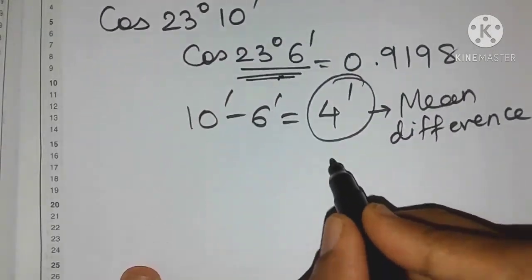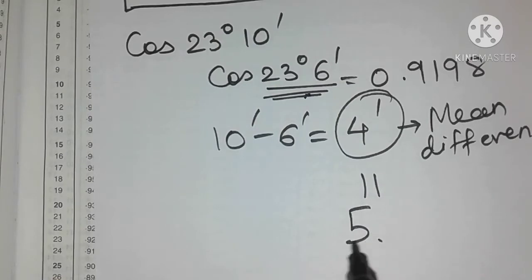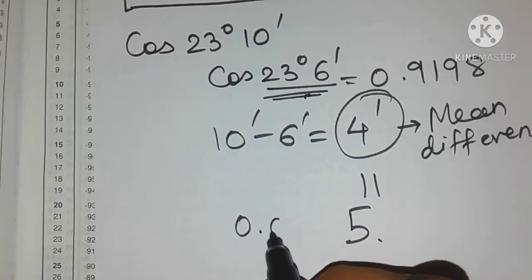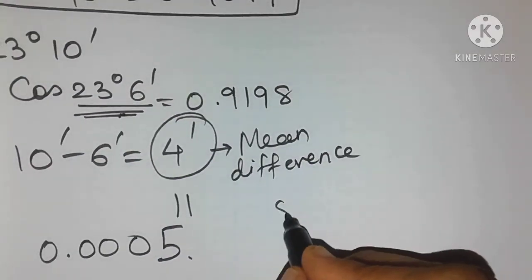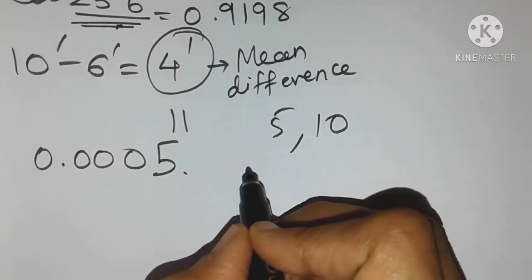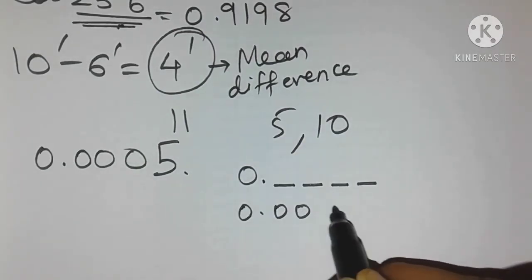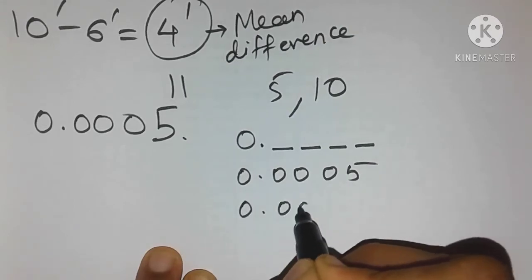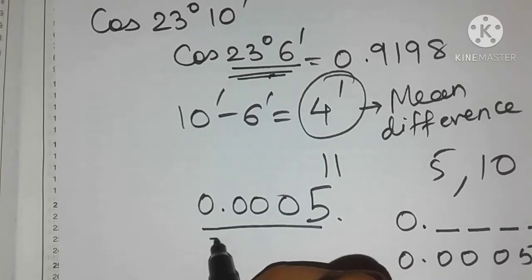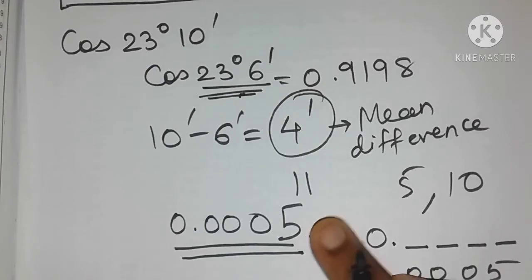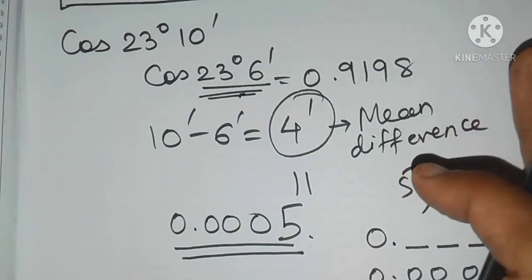So mean difference of 4 minutes is actually 5 in this case. Now although it is written as 5 you should not use it as number 5 but as 0.0005 friends. So the rule here is whatever mean difference you get whether it's 5 or 10 you have to always write it in this format: 0 point followed by 4 digits like this. So our mean difference is 0.0005. Now the last step is remaining. We have to subtract it friends from this cos value that we got.